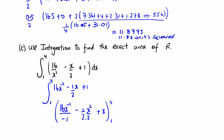So we can write it up here. The 16x to the minus 1 is minus 16 over x. And we're going to have minus x squared over 4 and plus x between the regions of 4 and 1. So we put our 4 in. We're going to get minus 16 over 4, minus 16 over 4 plus 4. And we're going to take away when we put 1 in.